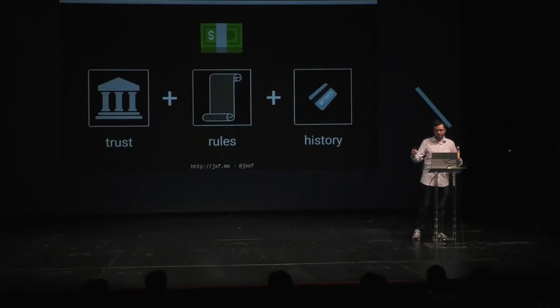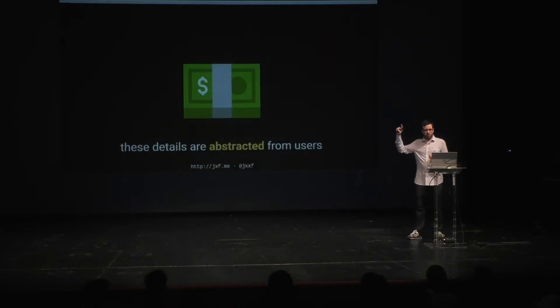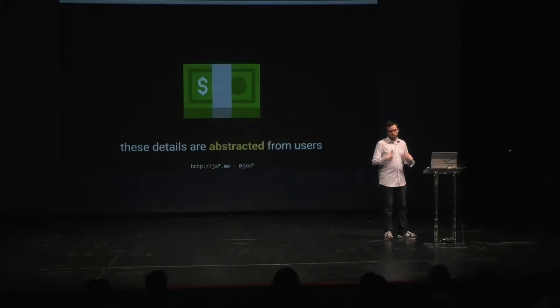The collection of these things is one way to get money. Importantly, the details about how to use this money are completely abstracted from users. Do you need to know how central banking works to go spend money to buy a sandwich? No. Do you need to know how the network of banks communicates to buy some ice cream? No. You don't have to know anything about how the money works in order to use it.